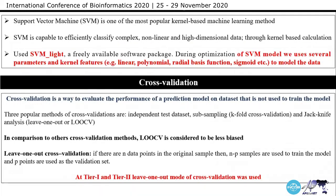For the machine learning method, we used SVM, which is the most popular kernel-based machine learning method. During optimization of the SVM model, we used several parameters and kernel functions: linear, polynomial, radial, and sigmoid. We evaluated the performance of the prediction model on a dataset not used to train the model. I used a leave-one-out cross-validation method because it is less biased. In leave-one-out cross-validation, if there are N data points, then N minus P samples are used to train the model and P points are used as the validation set. Both tiers used leave-one-out cross-validation.